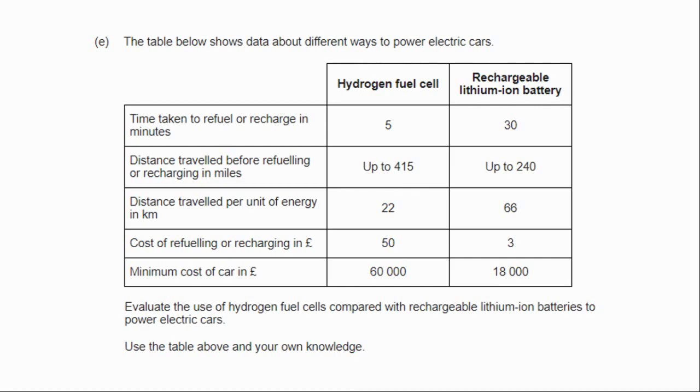But you do need to use the table and your own knowledge. So you need to talk about what's in the table. That'll get you a few marks for sure. After saying for example that the hydrogen is much quicker in refueling and can travel much further, but you get less energy. You get less distance for the same amount of energy, or it's much more expensive to refuel, or it's much more expensive to start with as a car. But then you'll also need to make points from your own knowledge about the hydrogen fuel cell. About how we get the hydrogen from renewable sources or non-renewable sources. About how the only product is water, which is a good thing. About how lithium ion batteries for example can be difficult to dispose of because they can leak toxic chemicals.